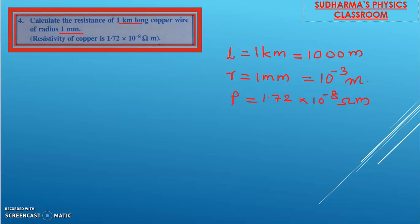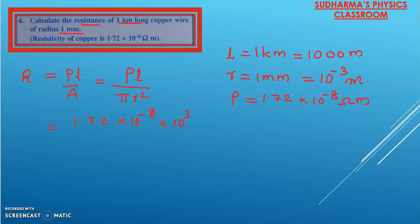We have to calculate the resistance using the direct formula R = ρL/A. Since area is not given, we use R = ρL/(πr²). Substituting: ρ = 1.72 × 10⁻⁸, L = 10³ meters, divided by 3.14 multiplied by (10⁻³)². After careful calculation, you will get the answer as 5.5 ohms.